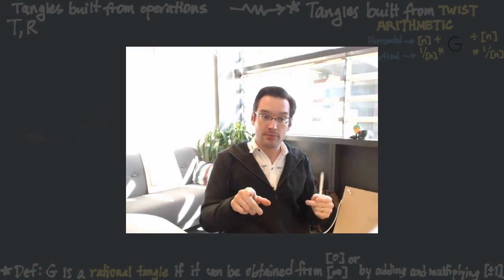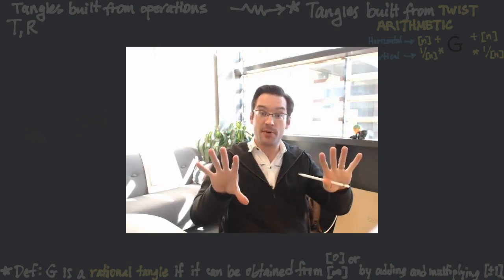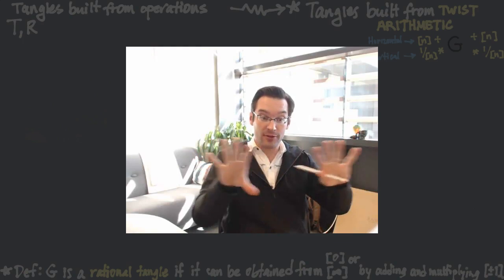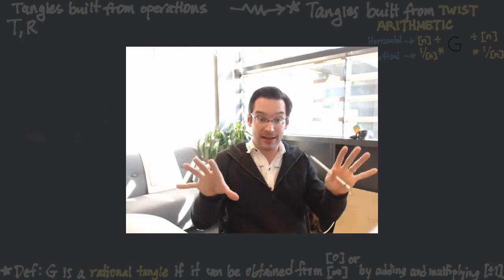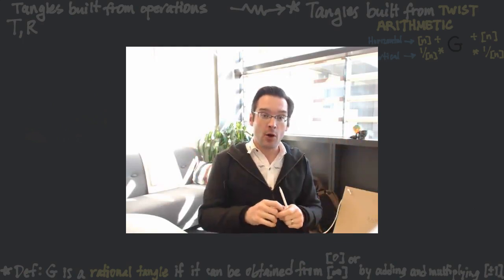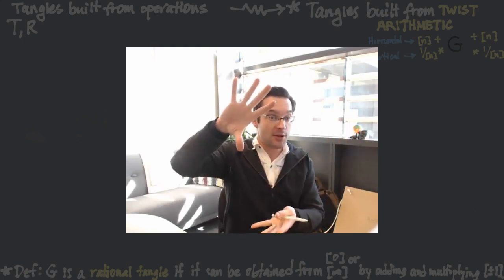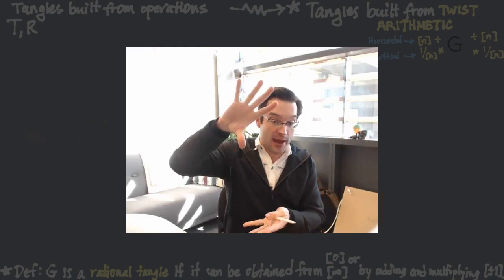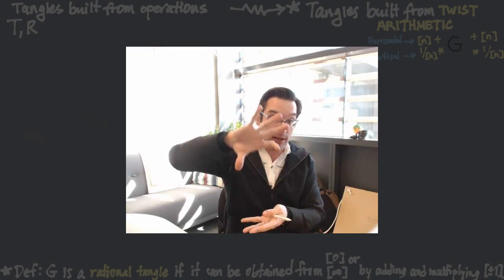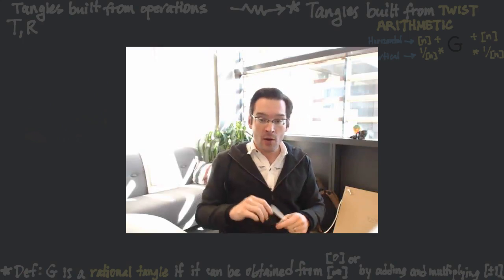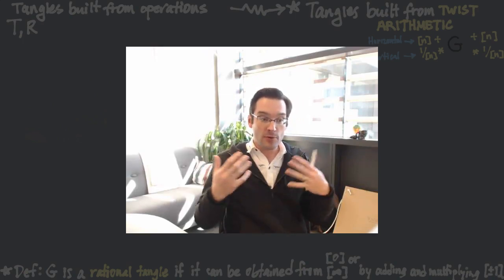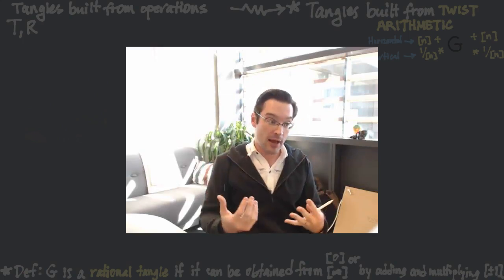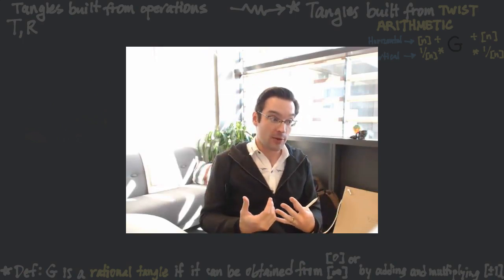By adding — that means juxtaposing tangles left and right and then connecting them up — or by multiplying, juxtaposing tangles up and down and then connecting them up, we now have a new recipe, a new paradigm for where tangles come from.